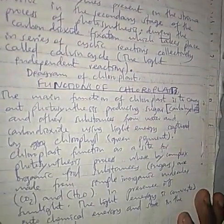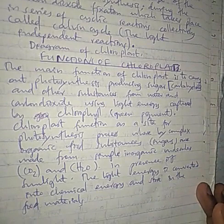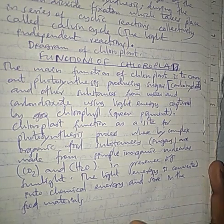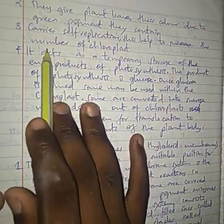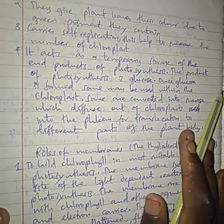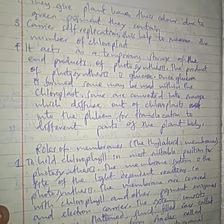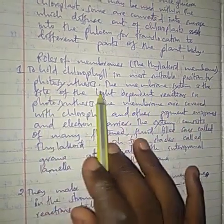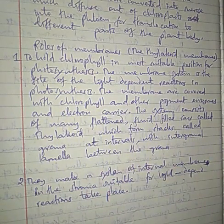The main function of Chloroplasts is to carry out photosynthesis — producing carbohydrate or sugar. Other roles include: giving plant leaves their green color due to green pigmentation; carrying out self-replication due to the presence of DNA; temporary storage of end products of photosynthesis. Thylakoid membranes hold chlorophyll in the most suitable position for photosynthesis and are the site of the light-dependent reaction.